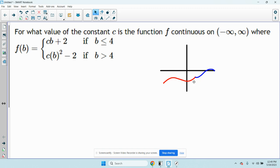Basically I have to say that the two parts of this function have to connect at four. So what I'll do is I'll just let b equal four and figure out what value of c makes this function equal to this function. So I have c times four or 4c plus 2 equals c times four squared minus 2.